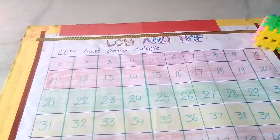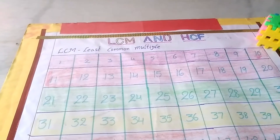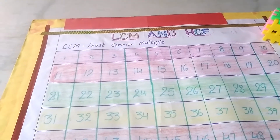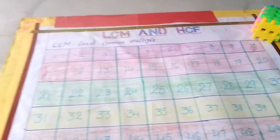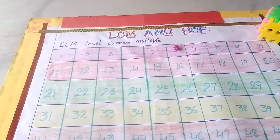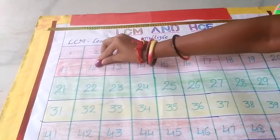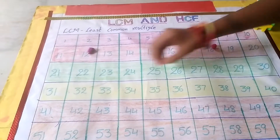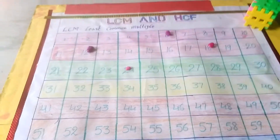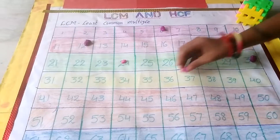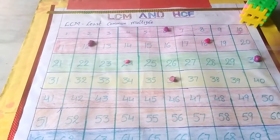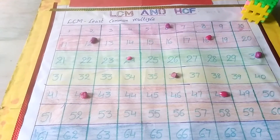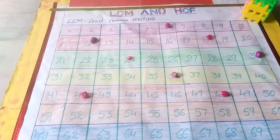For example, let us take 6 and 8. What are the multiples of 6? 6×1 is 6, 6×2 is 12, 6×3 is 18, 6×4 is 24, 6×5 is 30, 6×6 is 36, 6×7 is 42, 6×8 is 48, 6×9 is 54.